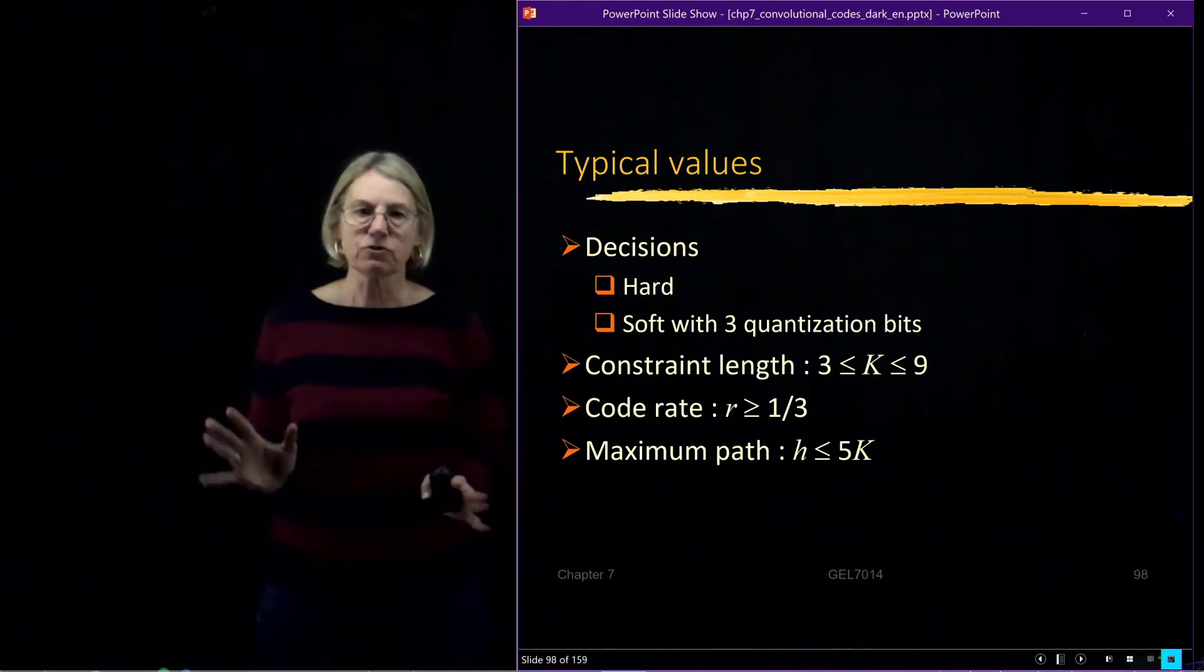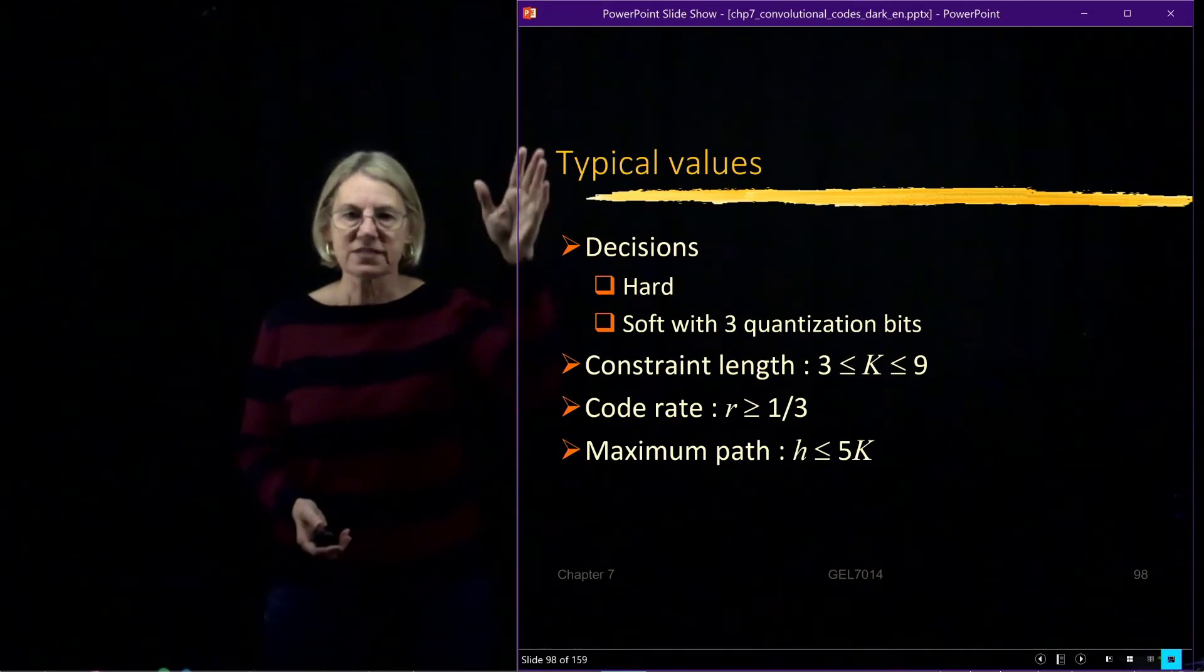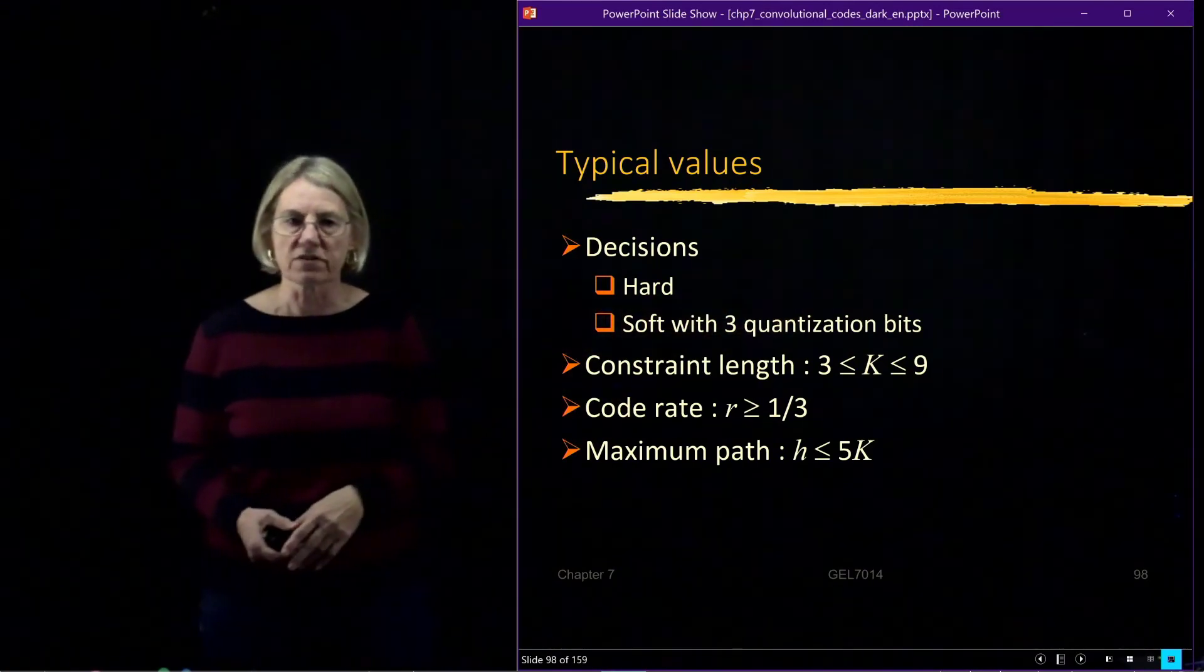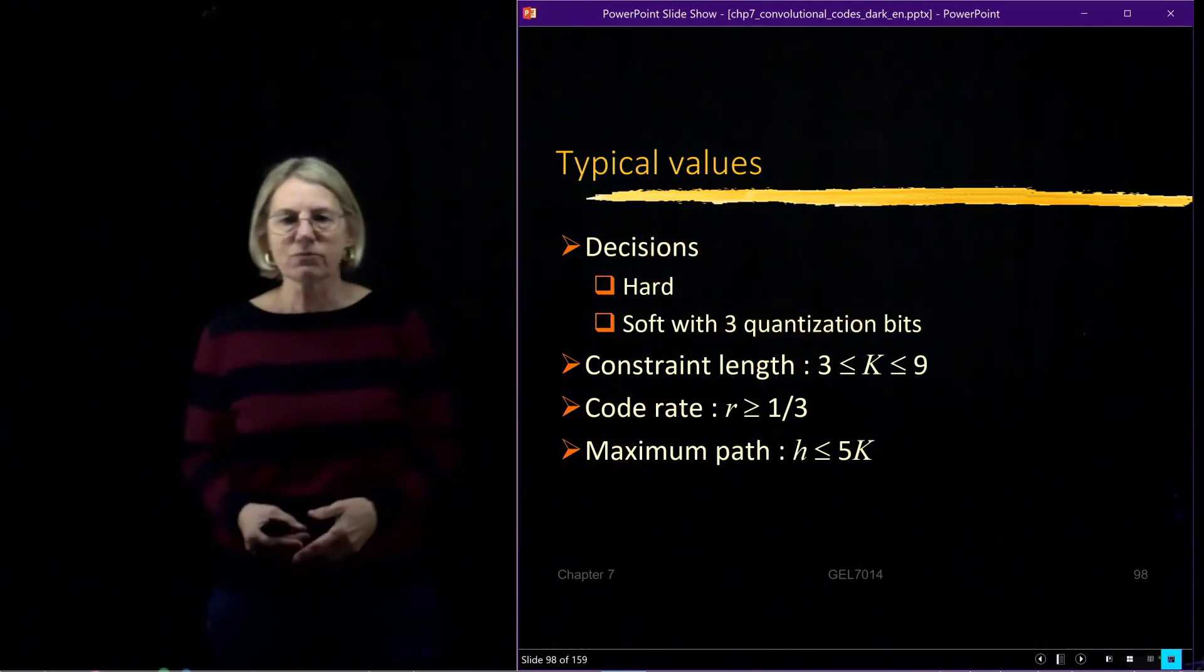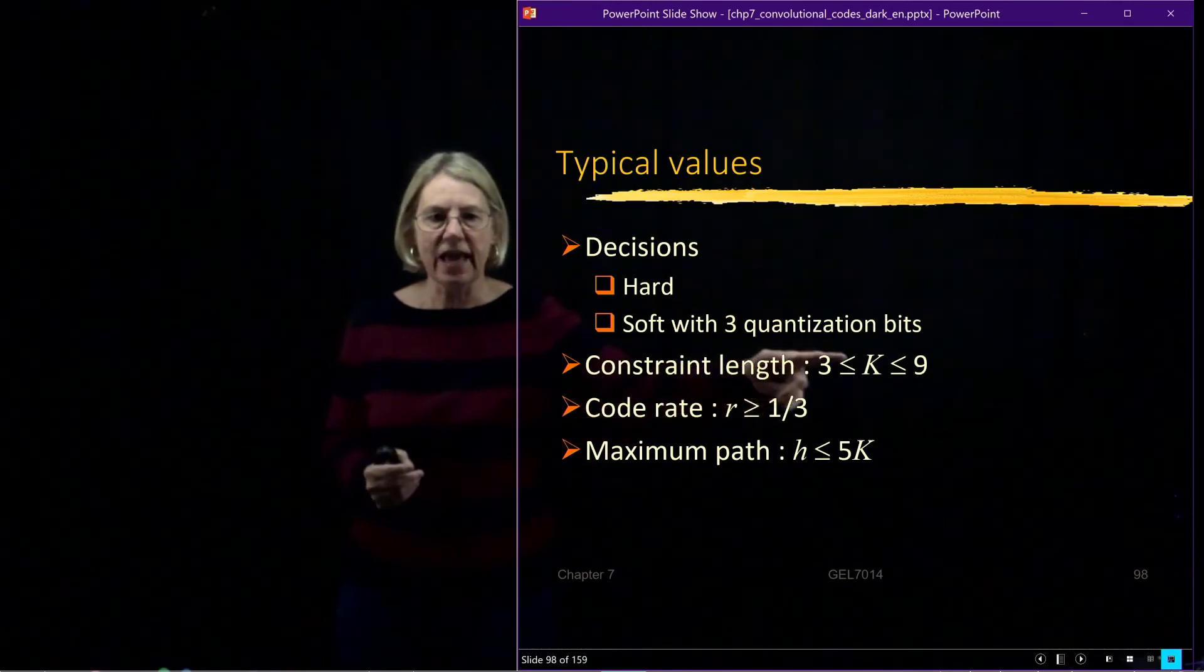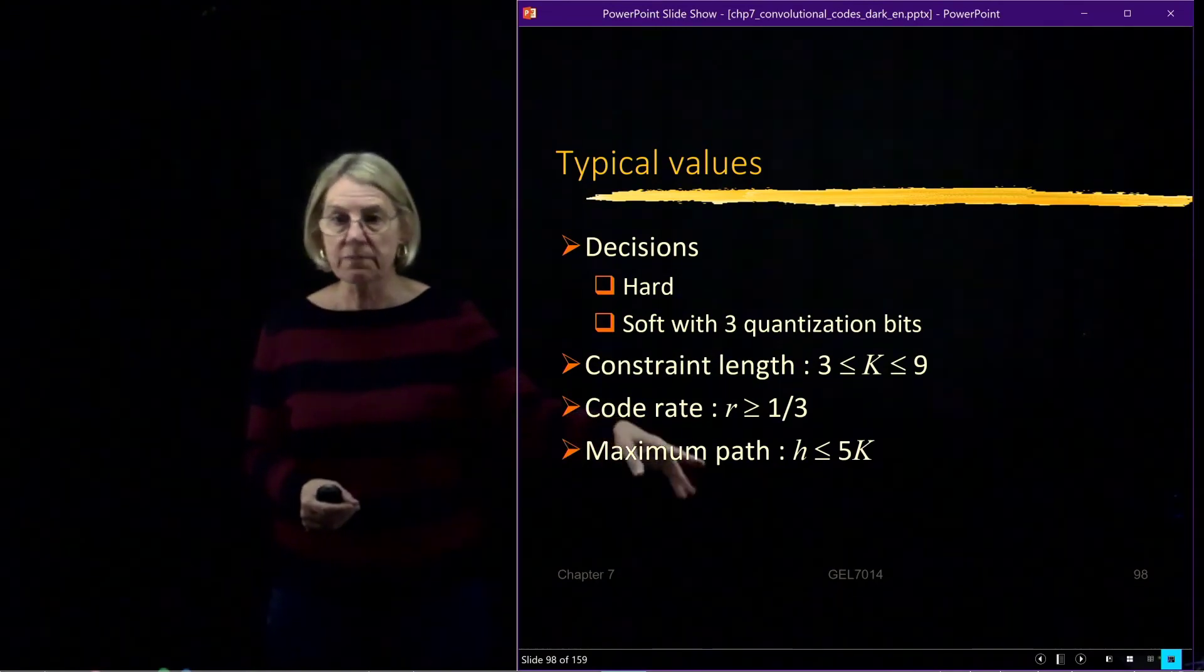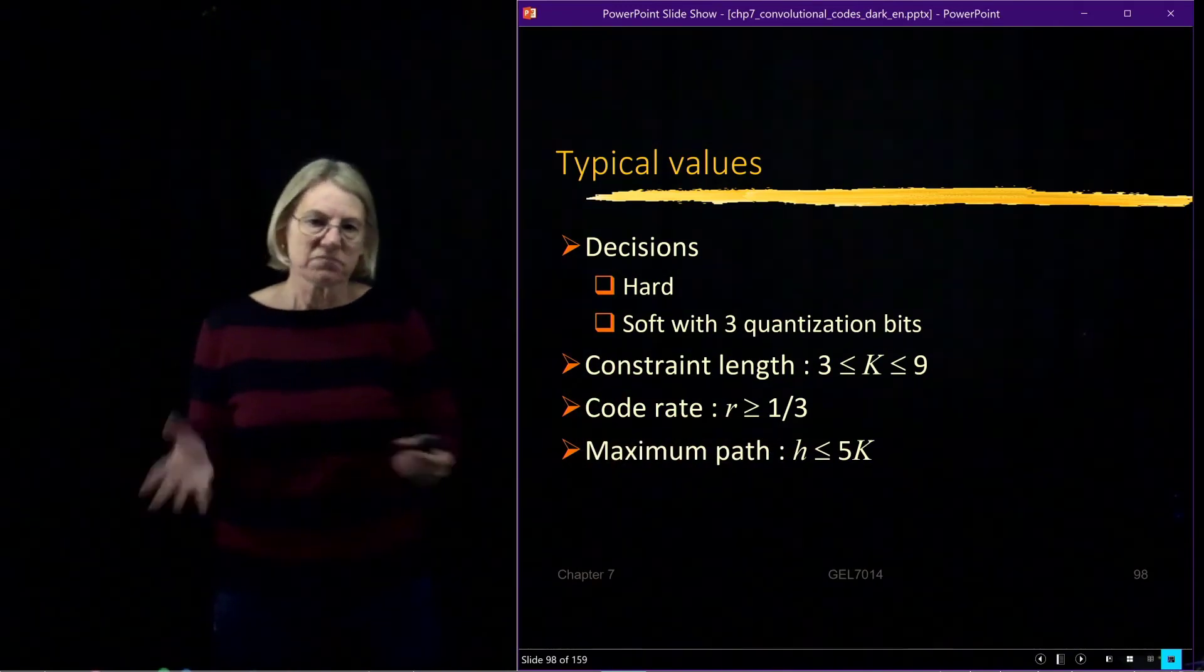So in summary, we've seen convolutional codes. We've seen different kinds of convolutional codes. And I just want to say some typical values that you will see. We had hard decisions and soft decisions. Both of them are very common. Soft decisions, you're not going to see any with more than three quantization bits. It's just not worth it. We look at constraint lengths. If we go beyond k equals 9, really the exponential growth, it just gets too big even for VLSI. And so we're typically looking at k somewhere between 3 and 9. Code rates were almost always above 3 to 1. And the maximum path, like I said, in the traceback length, was typically something below 5 times k because beyond that it's just not a good trade-off on the memory.